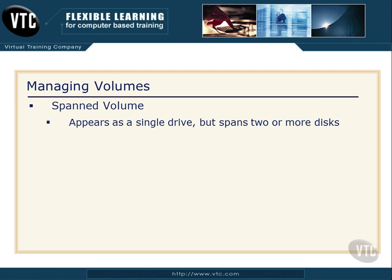A spanned volume is where we can span two or more disks, but that volume still shows up to us as a single drive. We can also include non-contiguous areas of the same disk.